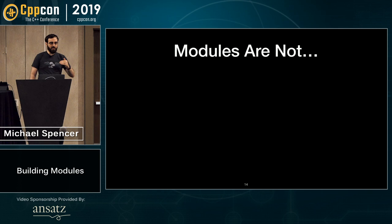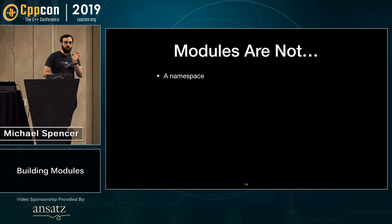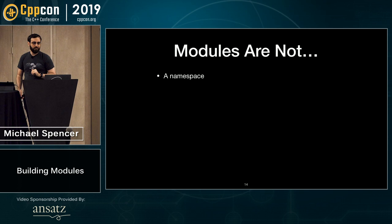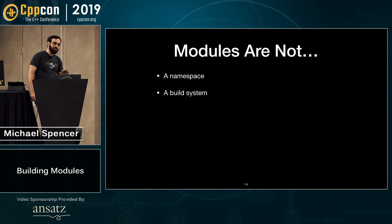Modules are a lot of things, but there are also things they aren't, and there's been a lot of confusion. First, modules are not a namespace. Name lookup in C++ is not impacted at all by modules other than things being visible or not — it does not impact scoping. A module's name only appears in module declarations and import declarations. Modules are also not a build system. The standard has never defined a build system; builds have always been implementation defined, and modules don't change anything here.